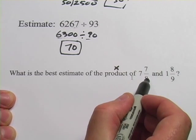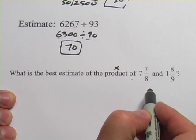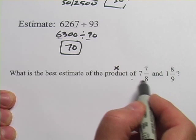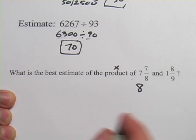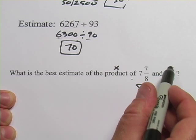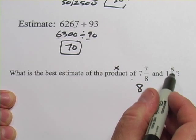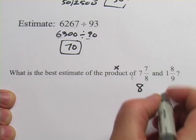7 and 7 eighths, well, 7 eighths is almost all the way to another 1. So 7 and 7 eighths is almost 8, so I'm going to say that's 8. And 1 and 8 ninths, that's very close to 2. 8 ninths is close to 1, so 1 and 1 would be 2.